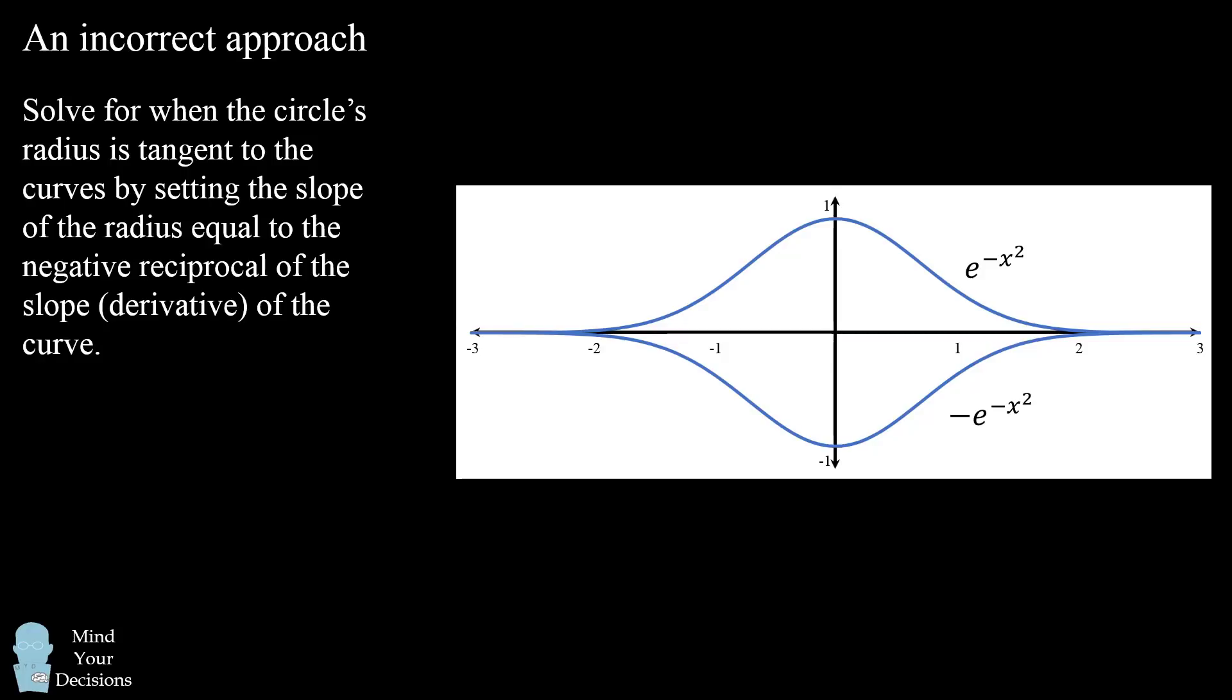One problem is that you might have the radius of the circle being completely vertical. This is because there's a point on this curve where the slope is zero. So if you were to consider the derivative of this curve, you may be overlooking the point at which the derivative is zero because the negative reciprocal would have to be an infinite value to consider the case where the radius is vertical. So one mistake is you might potentially be overlooking this solution.